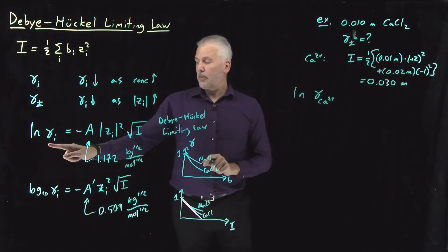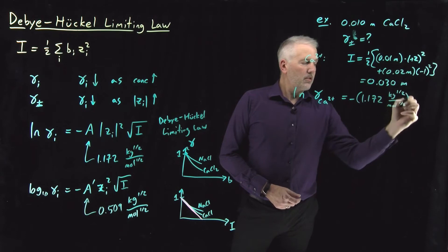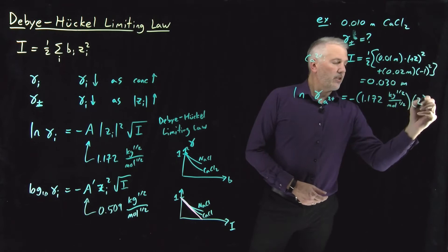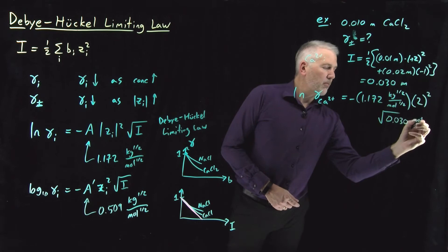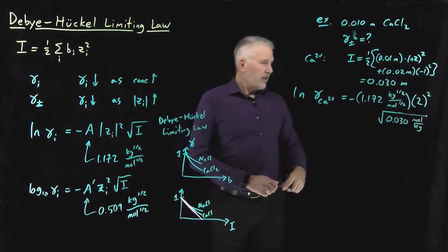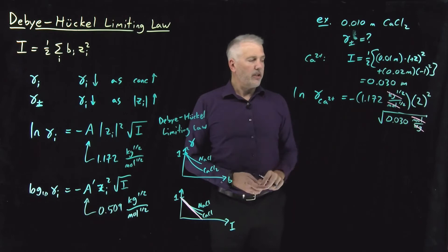The log of the activity coefficient for calcium, according to the Debye-Huckel limiting law, is going to be negative 1.172 square root of kilograms per square root of moles. The charge on this particular ion, calcium is 2, that gets squared. Multiply all that by the square root of the ionic strength, square root of 0.03 moles per kilogram. And now we can see square root of moles cancel square root of moles, square root of kilograms in the denominator cancel square root of kilograms in the numerator. So that was the reason for our strange looking units on the coefficient a.